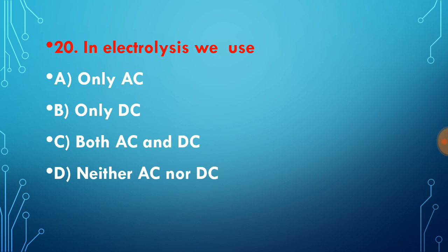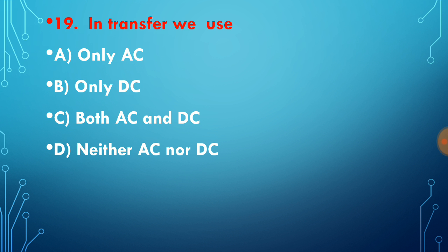In electrolysis, we need only the anode and cathode that should be fixed throughout the experiment. If you use AC, anode and cathode polarity changes continuously. But we should use DC because DC gives the same polarity always throughout the experiment. So in electrolysis we use only DC, and in transformer we use only AC.